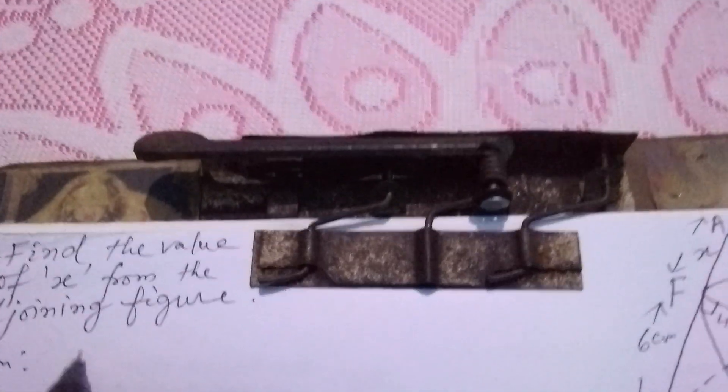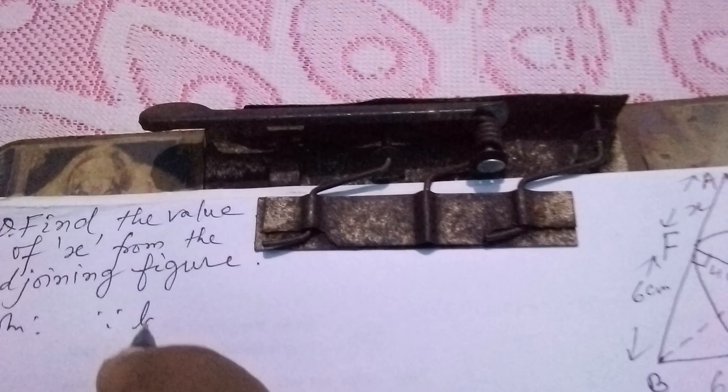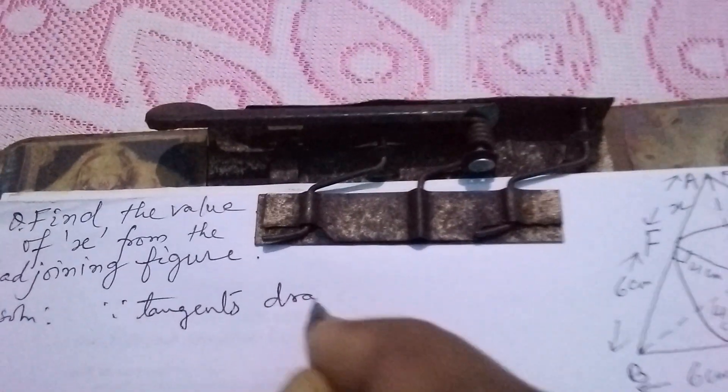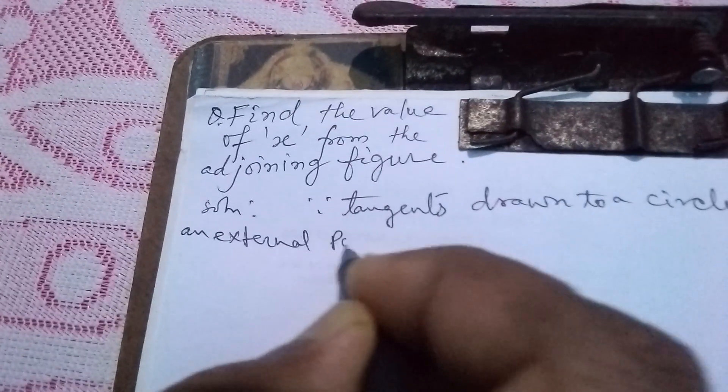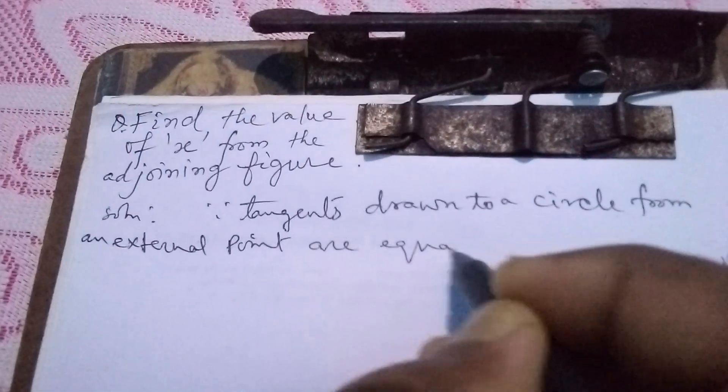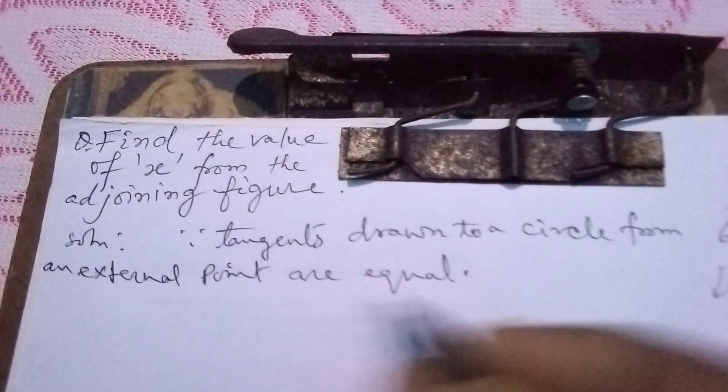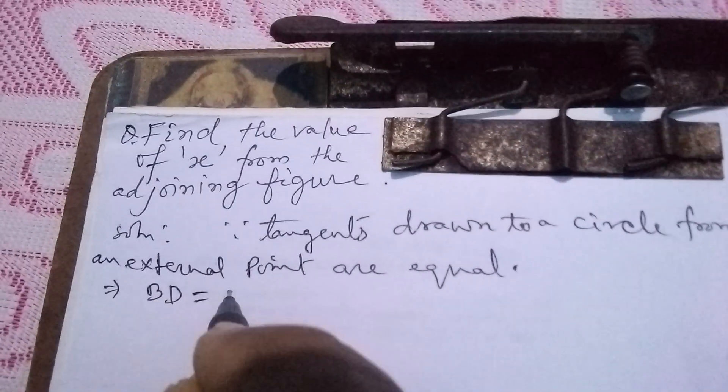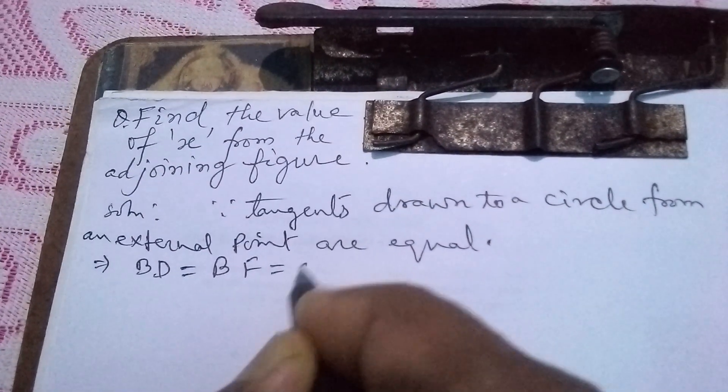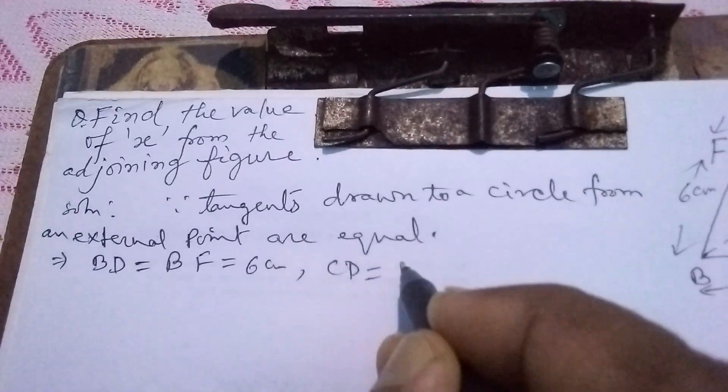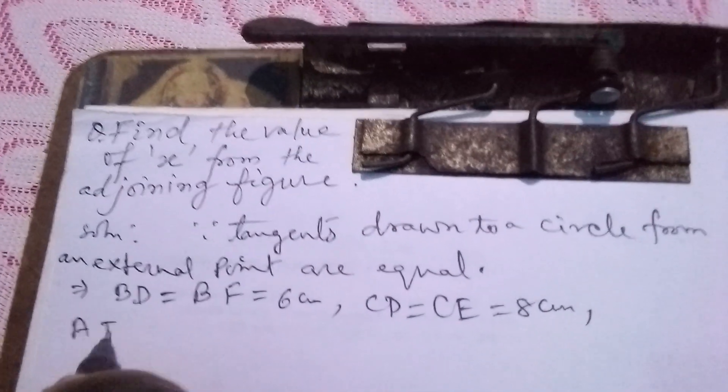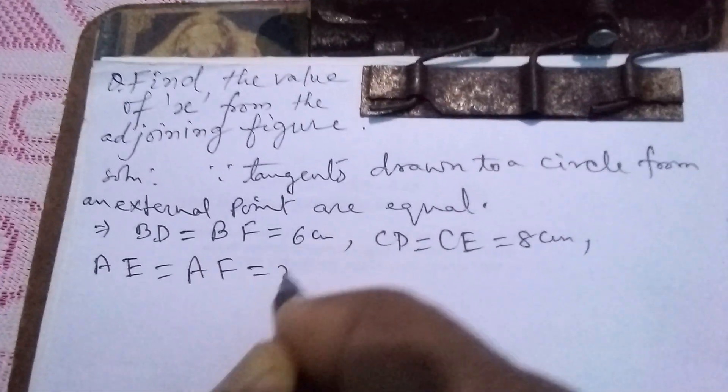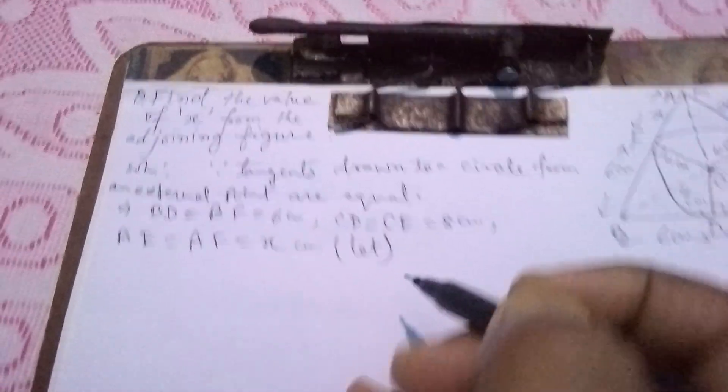Since tangents drawn to a circle from an external point are equal, we find that BD equals BF equals 6cm, CD equals CE equals 8cm, and AE equals AF equals X centimeters, which we have supposed and we have to find out.